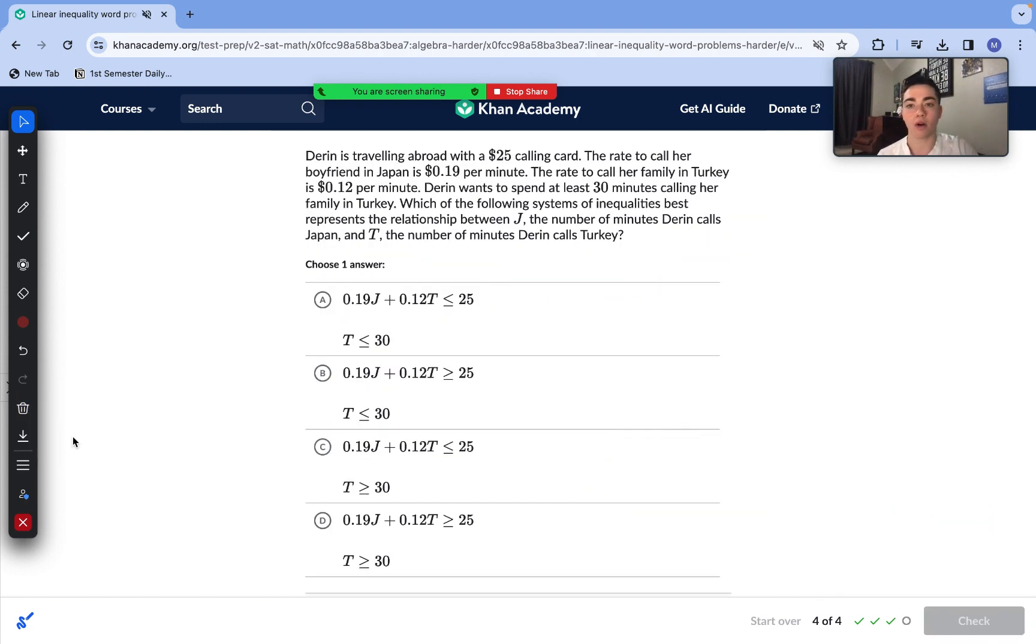On to our last question here. Doreen is traveling abroad with a $25 calling card. The rate to call her boyfriend in Japan is 0.19 cents per minute. The rate to call her family in Turkey is 12 cents per minute. Doreen wants to spend at least 30 minutes calling her family in Turkey. Which of the following systems of inequality best represents the relationship between J, the number of minutes Doreen calls Japan, and T, the number of minutes Doreen calls Turkey?